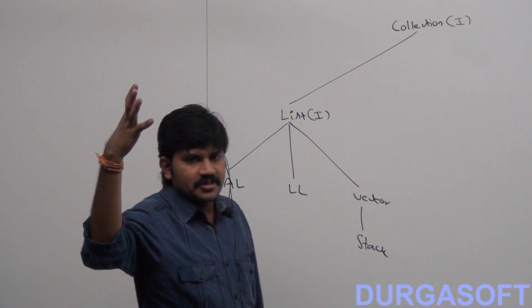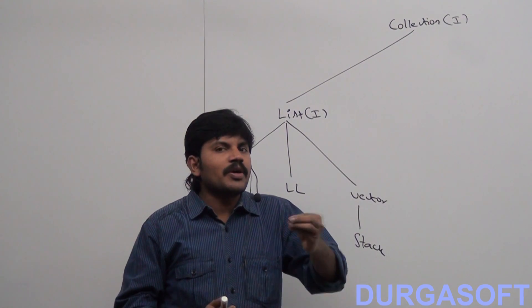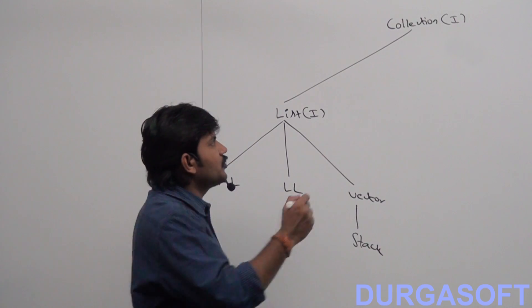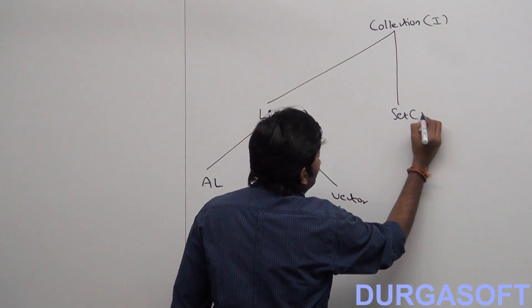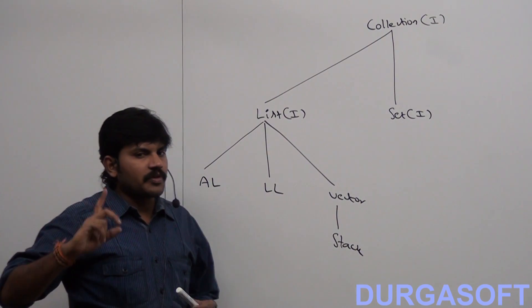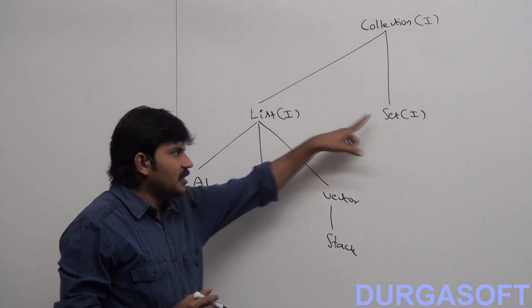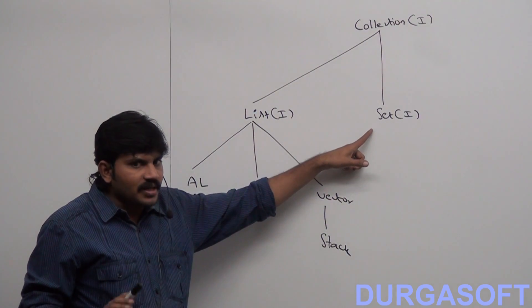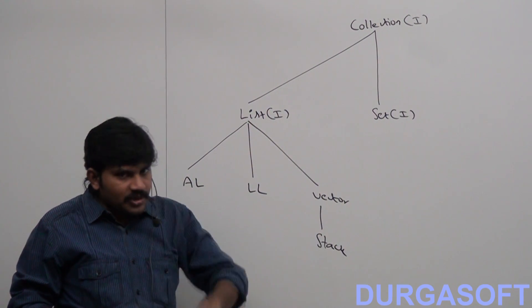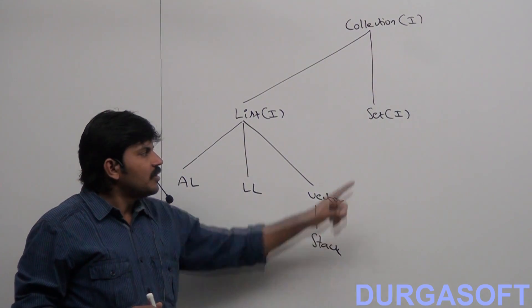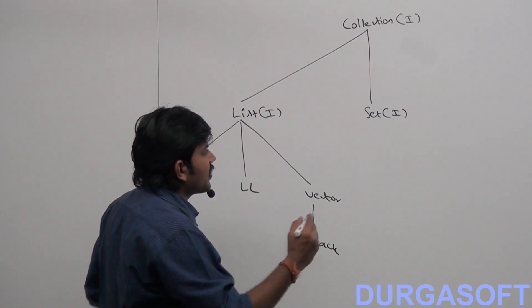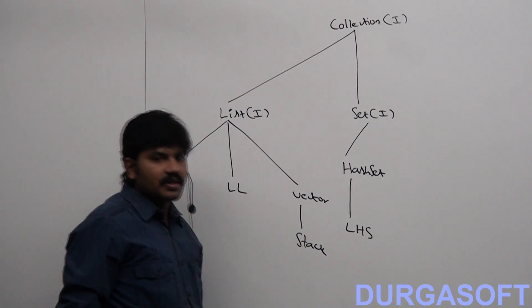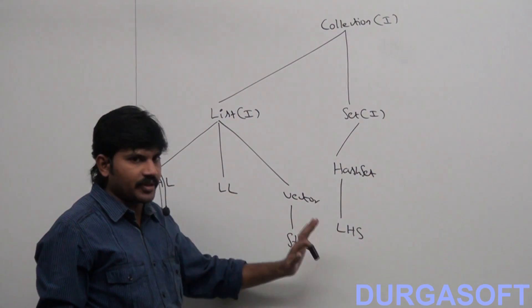Sometimes I don't want duplicates and insertion order is not important. Duplicates are also not allowed. Then we should go for the Set interface — a very important question for the interview room. What is the difference between List and Set? In List, duplicates are allowed and insertion order is preserved. But in Set, duplicates are not allowed and insertion order is not preserved. The implementation classes for Set are: HashSet and LinkedHashSet.